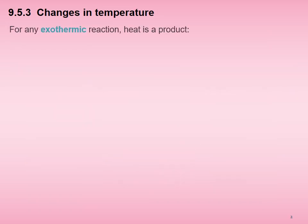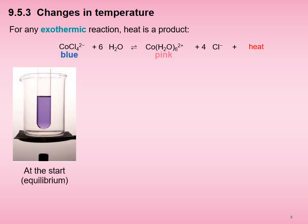For any exothermic reaction in which the enthalpy or heat change is negative, or less than zero kJ per mole, heat is treated as though it were a product. For example, for the reaction between the blue tetrachlorocobaltate(2+) ion and water to give the pink hexa aqua cobalt(2+) ion and chloride ion, we write heat on the right-hand side of the equation. In a particular experiment at the start, the reaction mixture is violet, implying a mixture of some blue species and pink species.